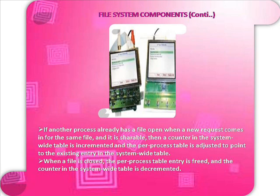If another process already has a file open when a new request comes in for the same file and it is shareable, then a counter in the system-wide table is incremented and the per-process table is adjusted to point to the existing entry in the system-wide table. When a file is closed, the per-process table entry is freed and the counter in the system-wide table is decremented.